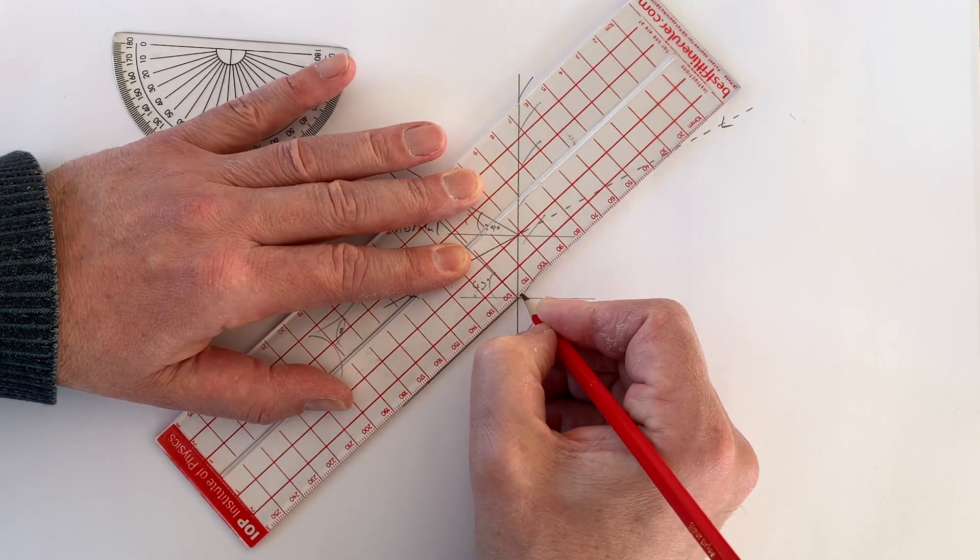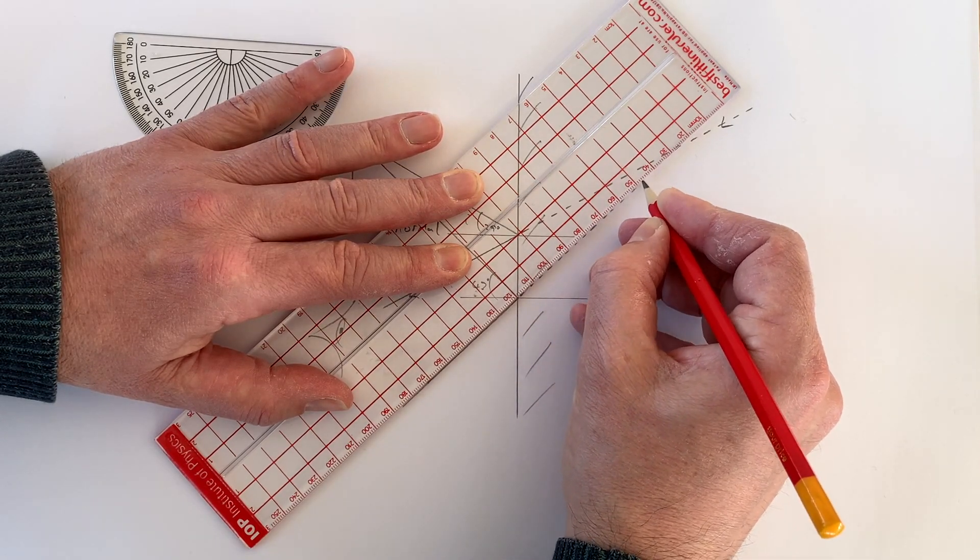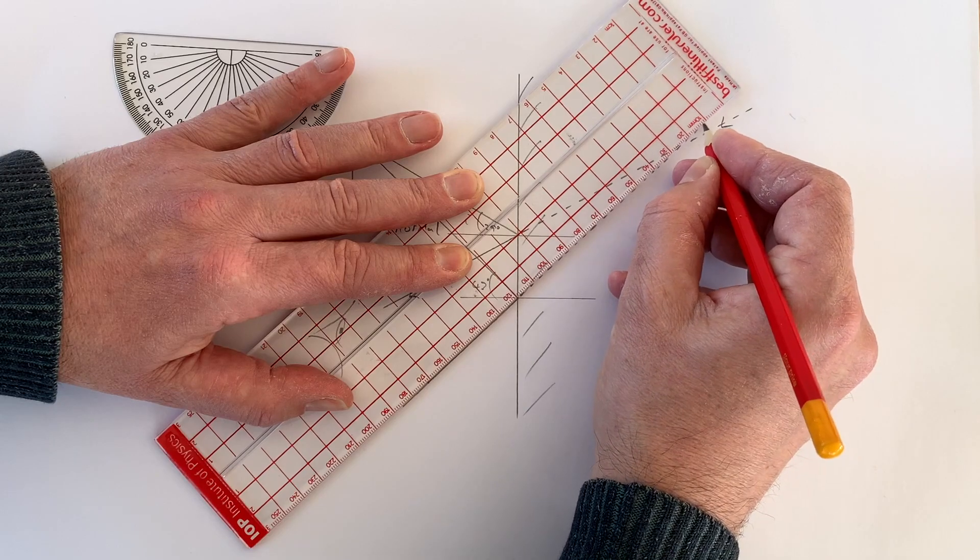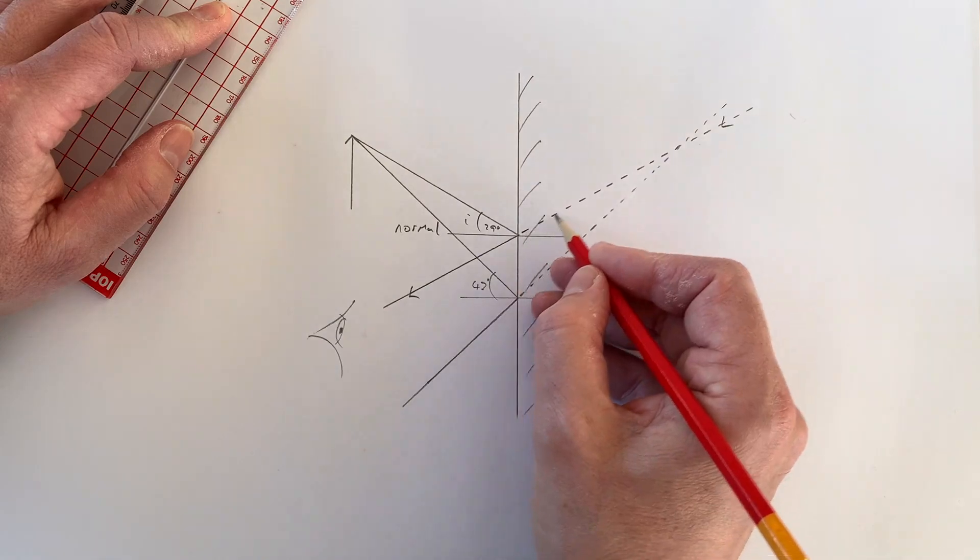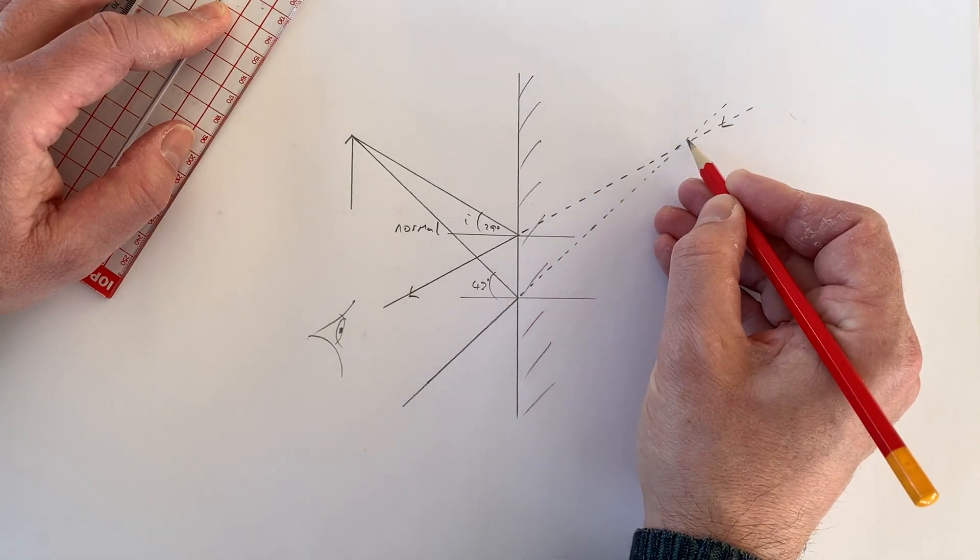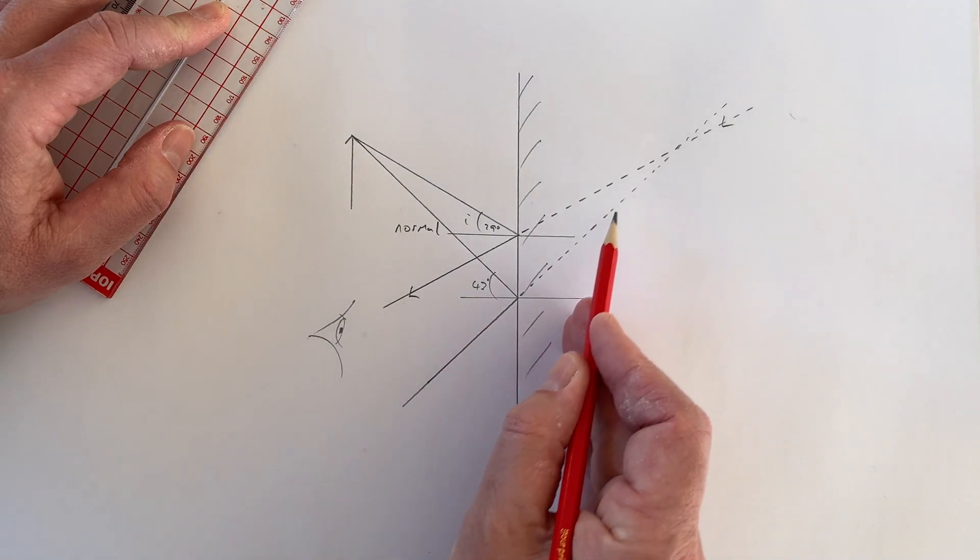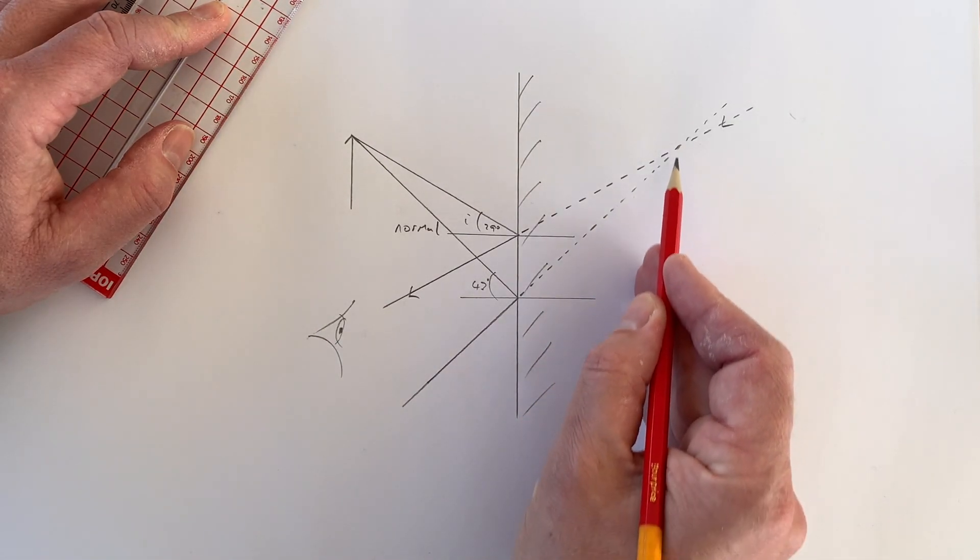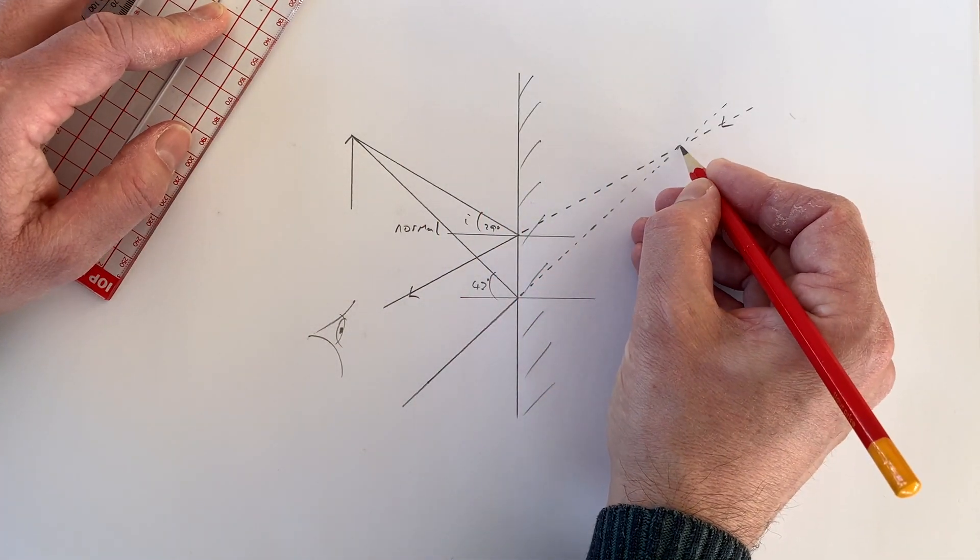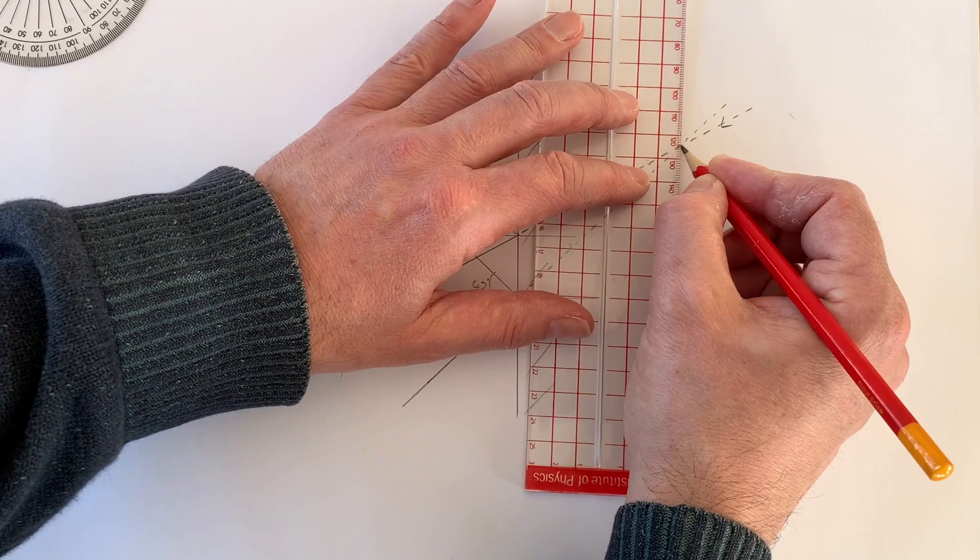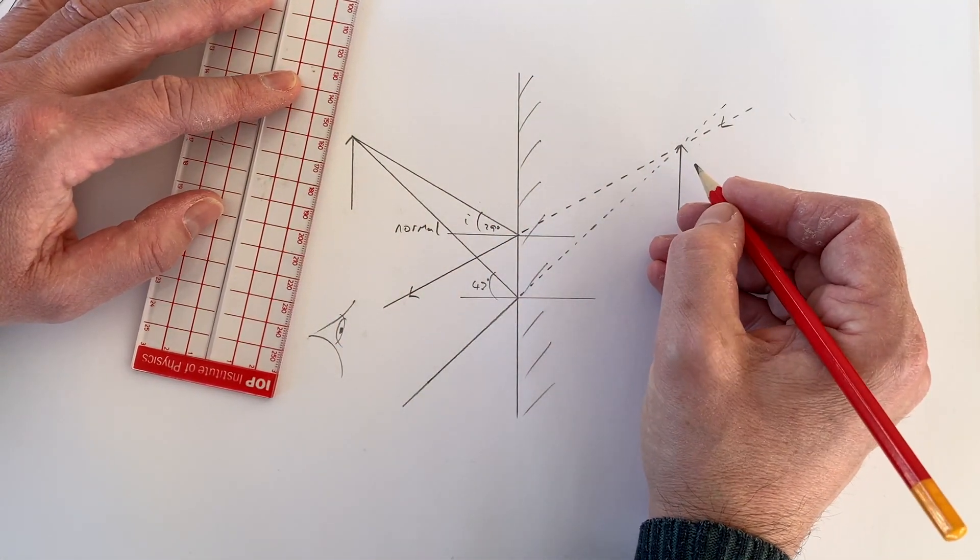And if I extend that ray backwards, this second virtual ray is going to look as though it comes from that point over there. And we'll notice that the two virtual rays appear to cross. Now, from the point of view of the observer over here, these rays look as though they're coming from the reflection of the object in the mirror. And so, that reflection must be located at the point where the two rays cross. In other words, our image is going to be at this point here.